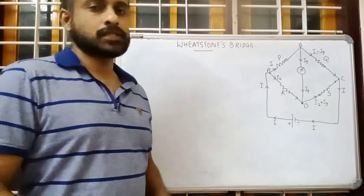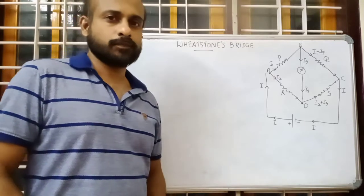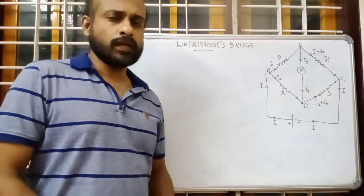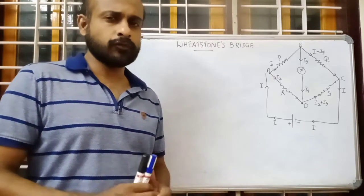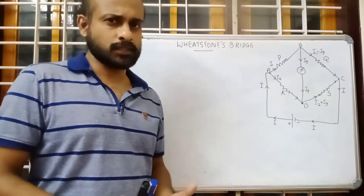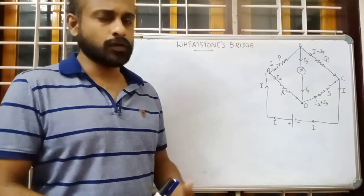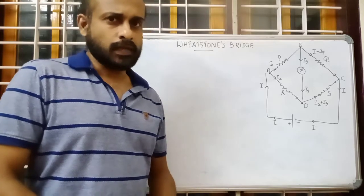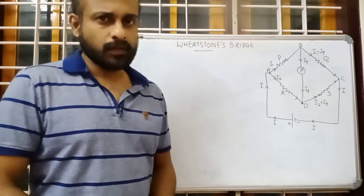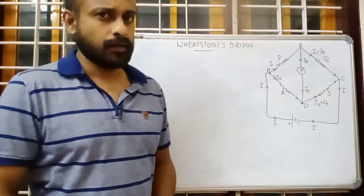Today our topic is Wheatstone's Bridge. Wheatstone's Bridge is an arrangement of four resistors. It is a network of four resistors, a galvanometer and a cell.